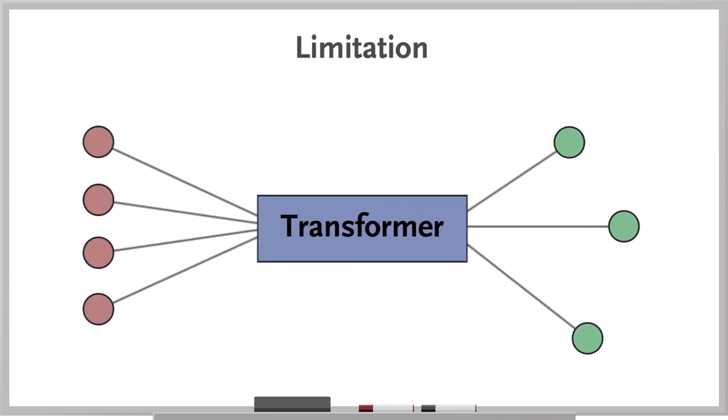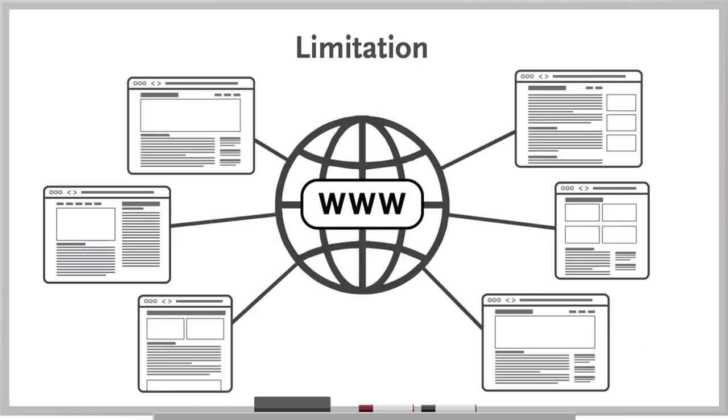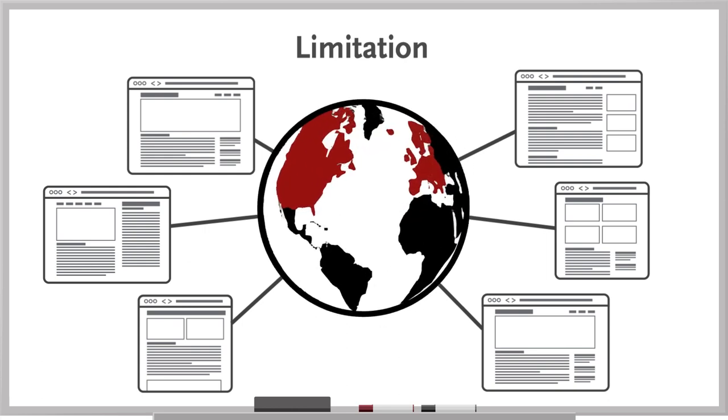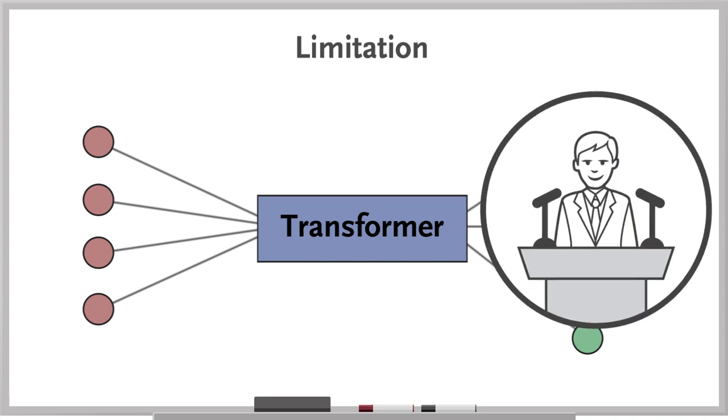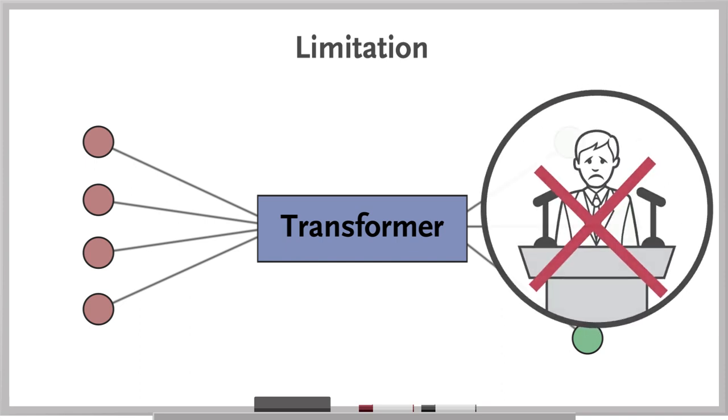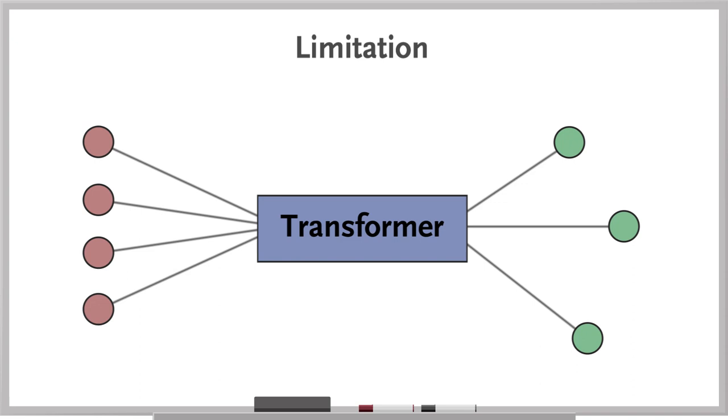There are other limitations, too. Any model will reflect the bias of its inputs. For example, most models have been trained using data from the Internet where content from high-income countries is overrepresented. Another limitation is that these models can generate answers that are articulate and confident and wrong. And so far, they tend to underperform with highly specialized knowledge, such as complex clinical questions.